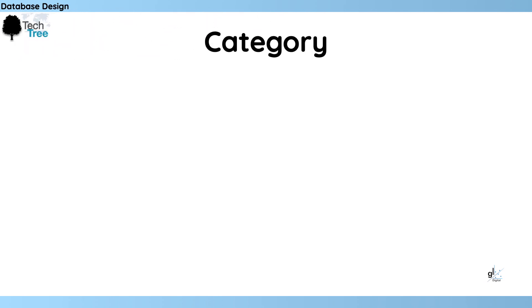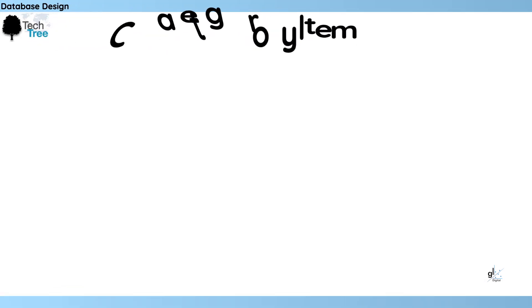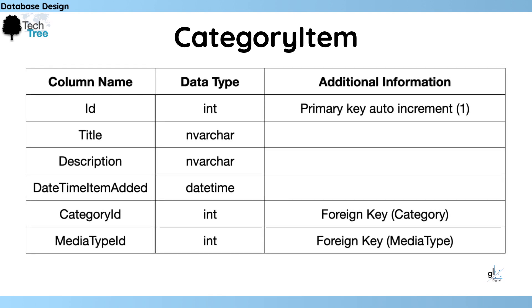The category table: the ID field is of type Integer, is the table's primary key, and will auto-increment by 1 each time a new row is added. Title is of type NVarChar. Description is of type NVarChar. Thumbnail image path is of type NVarChar. The category item table: ID is of type Integer, is the primary key, and auto-increments by 1. Title is of type NVarChar. Description is of type NVarChar. DateTime item added is of type DateTime. Category ID is of type Integer and is a foreign key from the category table. Media type ID is of type Integer and is a foreign key from the media type table.